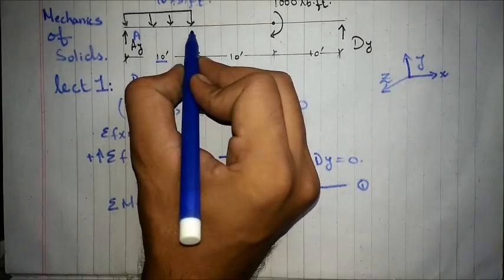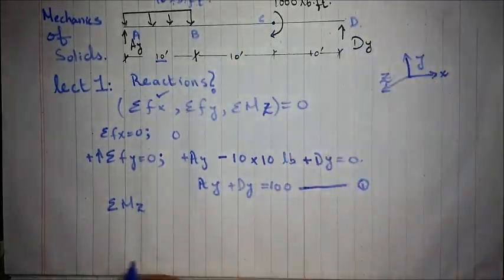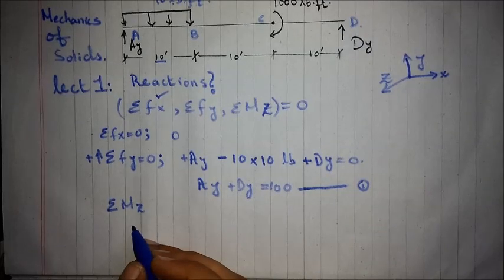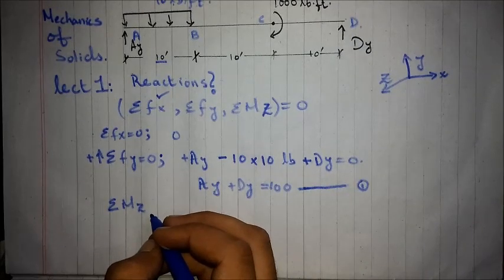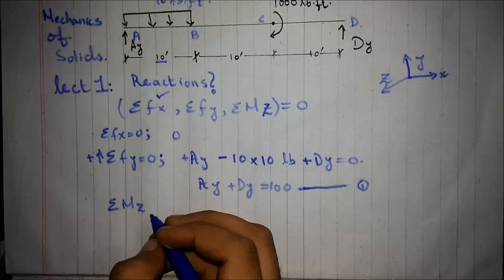Let's call this as point A, B, C, D. For this equation, we select the point which gives such an equation that has only one unknown in it.